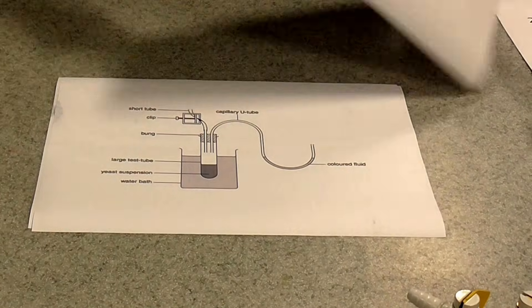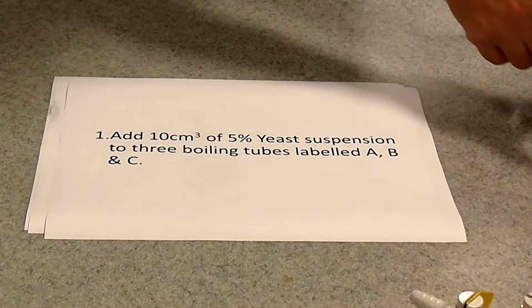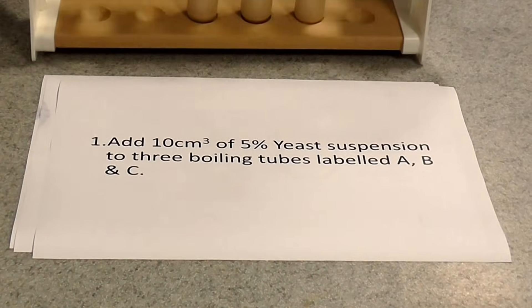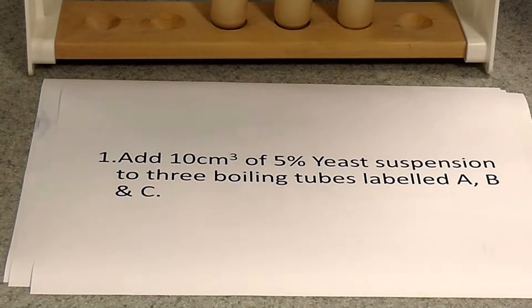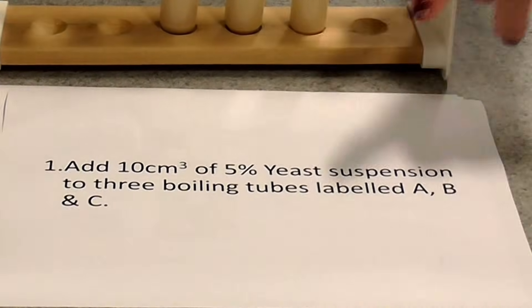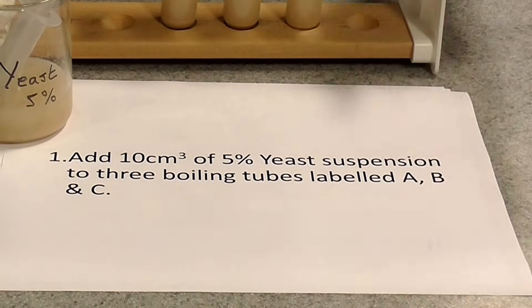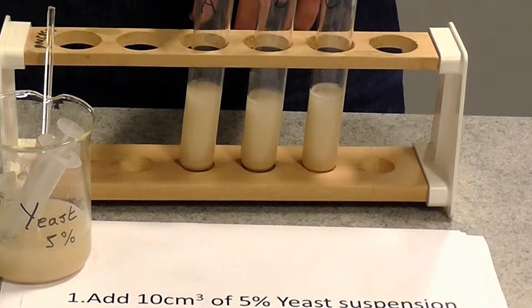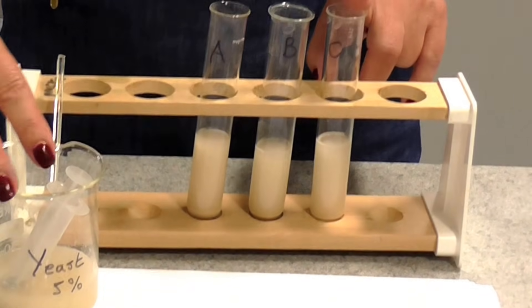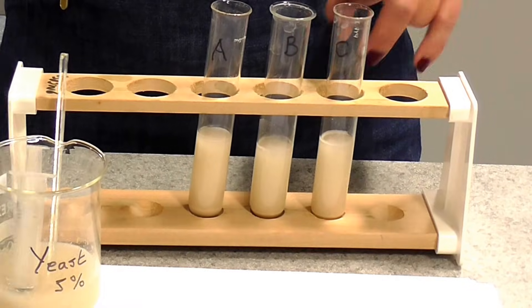The first thing you have to do in this investigation is to prepare your three boiling tubes for your three different sugars. The first step is to add 10 centimetres cubed of 5% yeast suspension to each of your tubes, which you've labelled A, B, and C. You can use a syringe to do that.